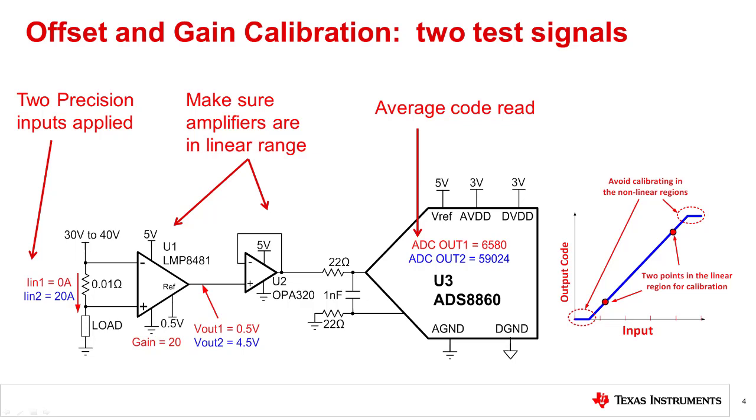However, you have to be careful to make sure that the amplifiers are all operating in the linear region of the curve. Looking at the input-output relationship, you can see how it would not be possible to determine the slope of the transfer function in the nonlinear region.